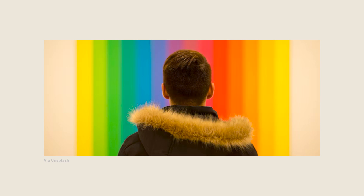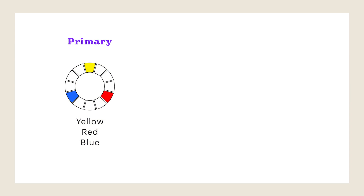Now that you know some design principles, let's talk about colors. Color plays a fundamental role in visual design, and understanding color theory is essential for creating harmonious compositions and conveying the desired message. Let's start with primary colors. Primary colors are the three basic tones from which all colors are created. In the traditional color model, the primary colors are red, blue, and yellow. These colors cannot be obtained by mixing other colors — think of them as the building blocks for all other colors.